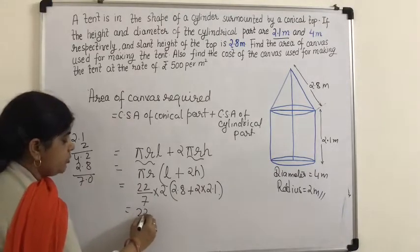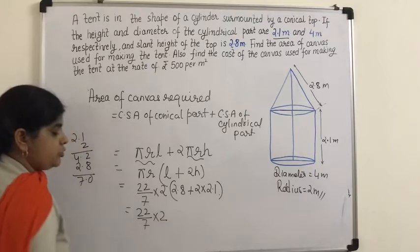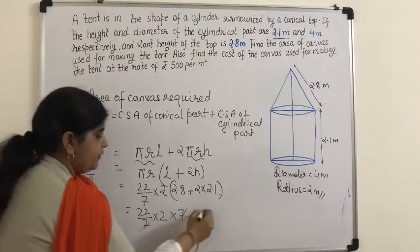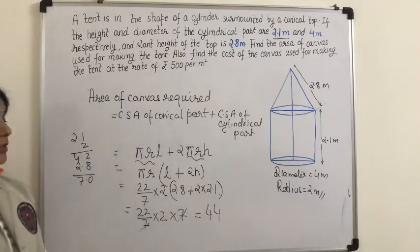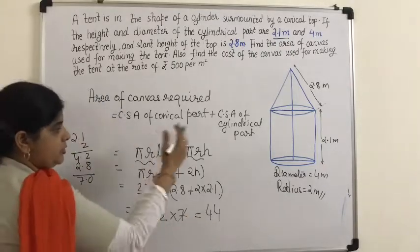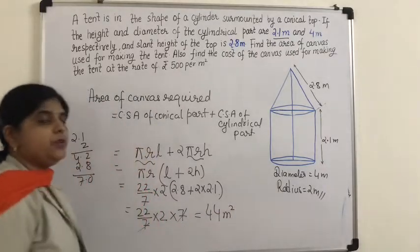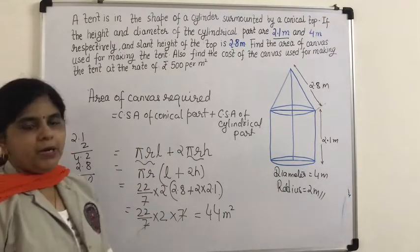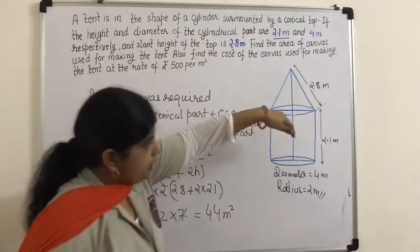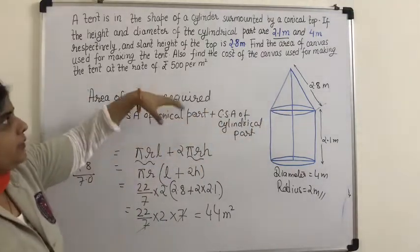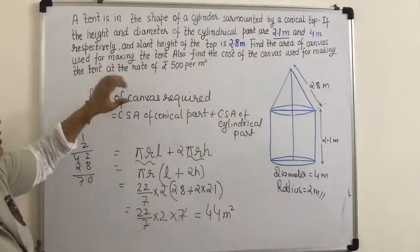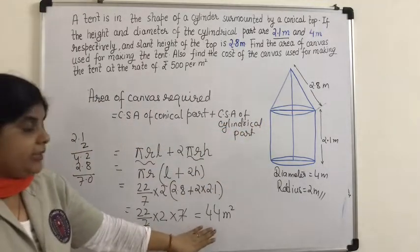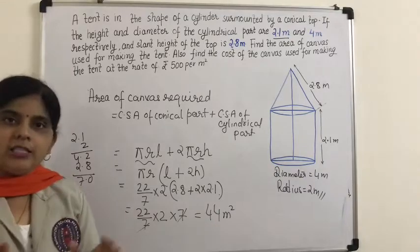So the expression becomes (22/7) × 2 × 7. The two 7s cancel, leaving 22 × 2 = 44. So the area of canvas used for making the tent is 44 square meters.